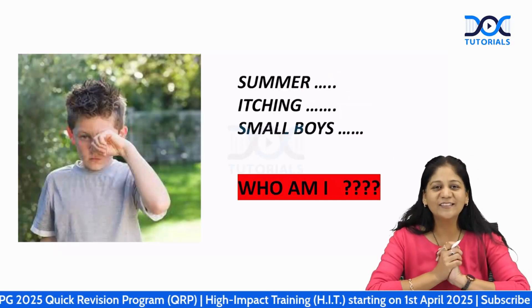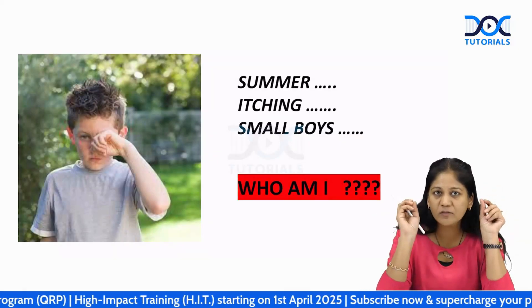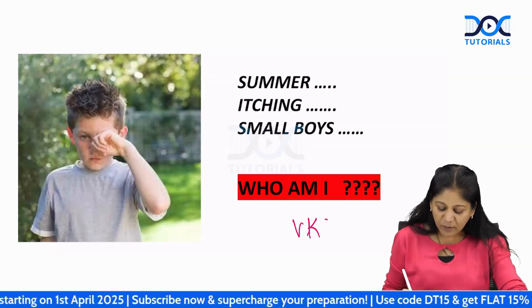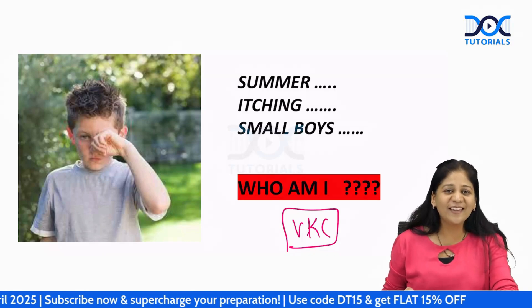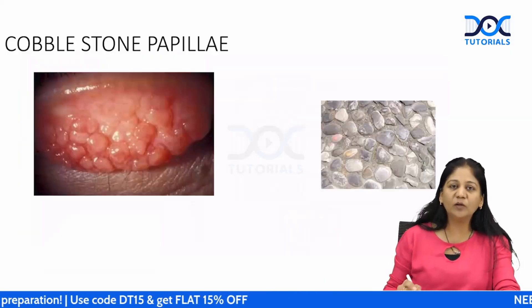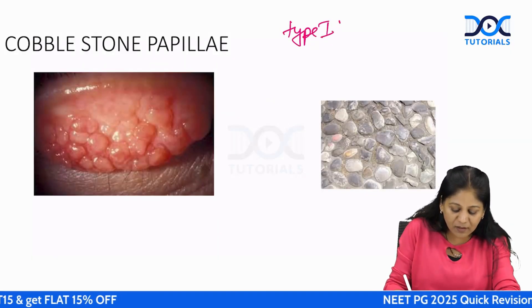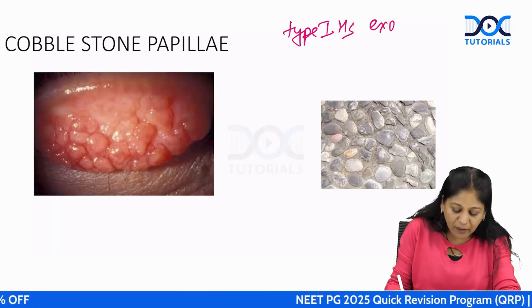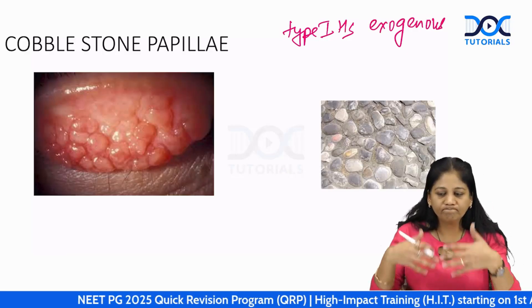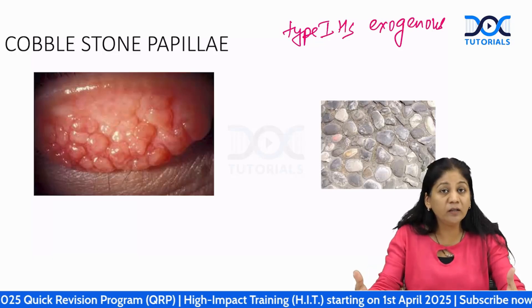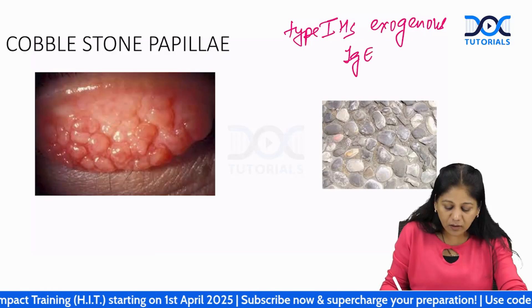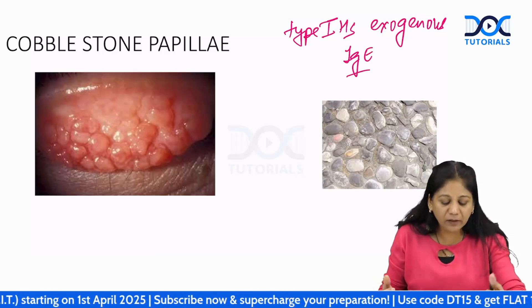Next topic: if given the buzzwords 'summers, itching, small boys,' do not just say allergy — be specific and say VKC, vernal keratoconjunctivitis. VKC involves a type 1 hypersensitivity reaction mainly due to exogenous allergens like dust particles or pollen grains, occurring in children via an IgE-mediated reaction.